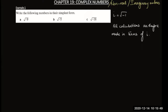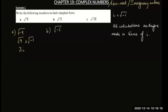All calculations are done in terms of i. For example, the root of minus nine can be separated as root of nine multiplied by root of minus one. Root of nine is three and root of minus one is i, so root of minus nine can be written as 3i. Similarly, root of minus five can be written as root of five times root of minus one, which becomes root of five i.